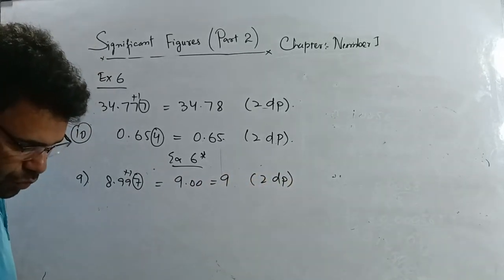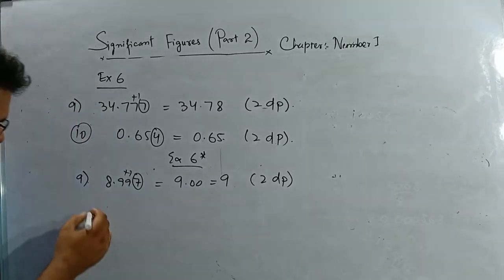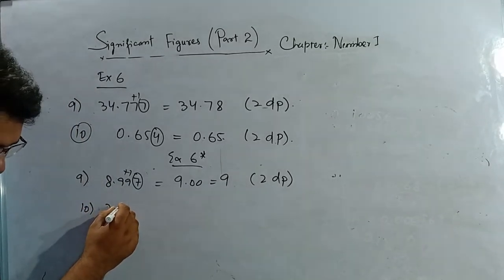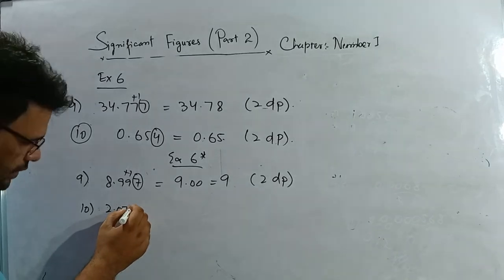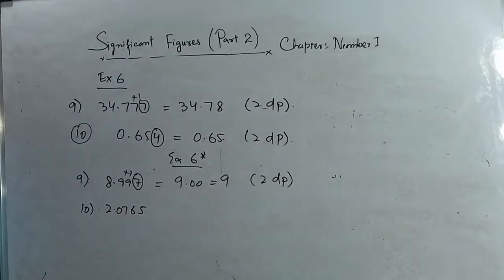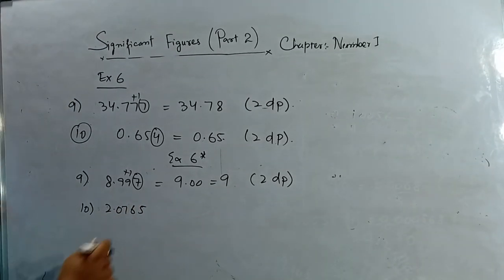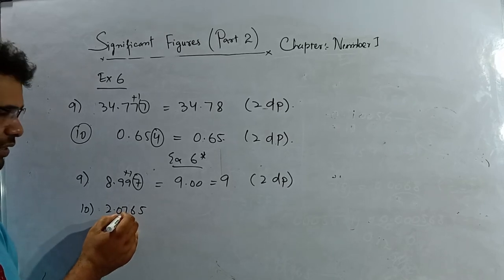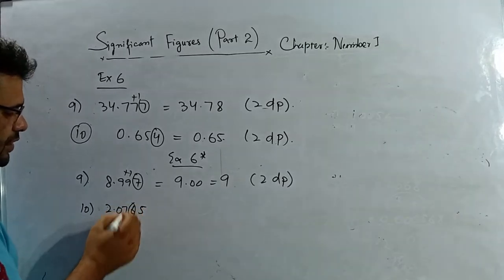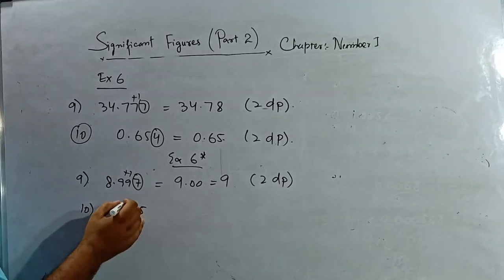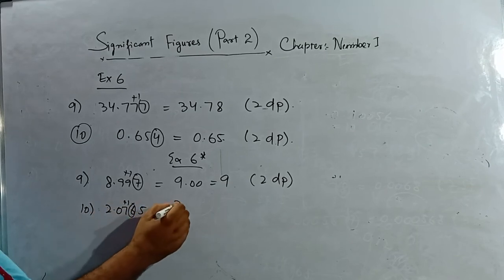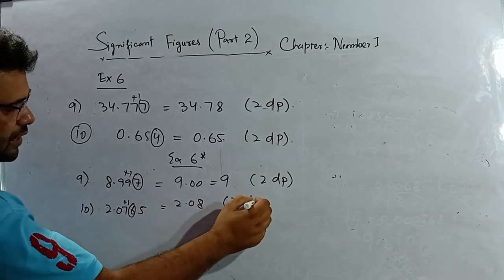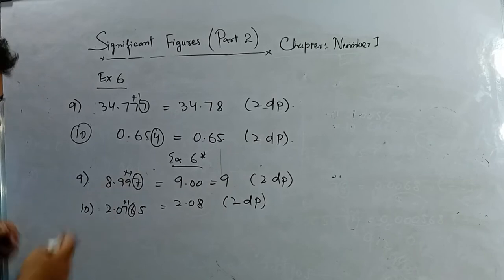Question number 10: 2.0765, write correct to two decimal places. Zero and seven are two decimal places; the third is 6. It is greater than five so I add one. The answer is 2.08, two decimal places.